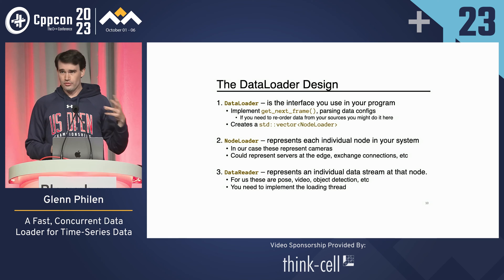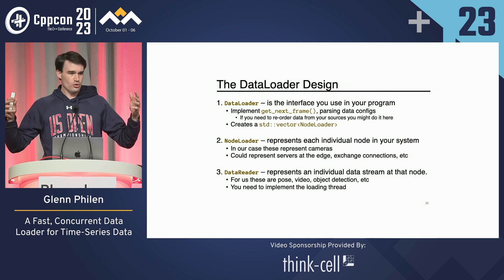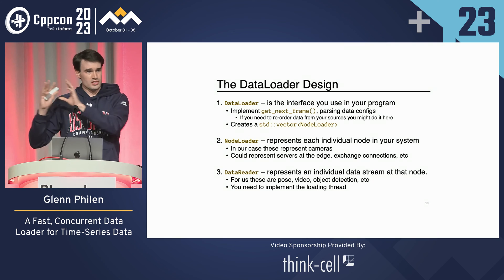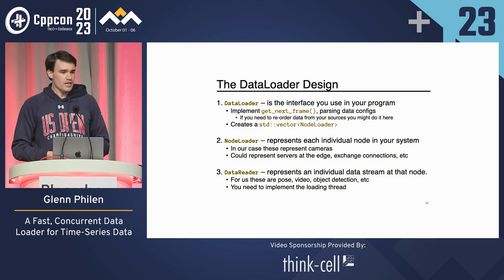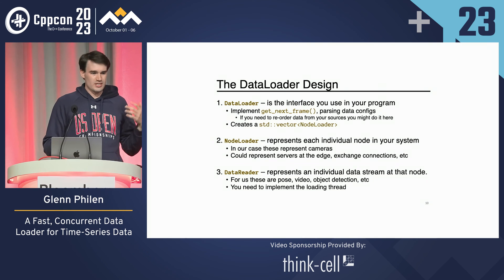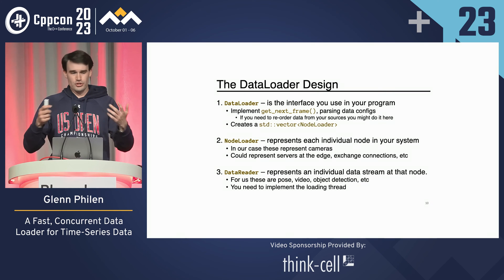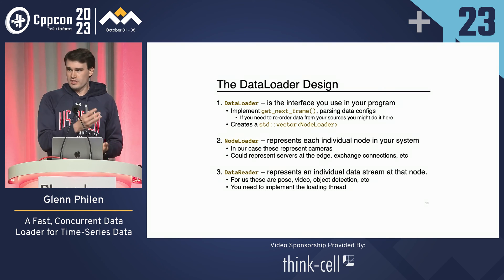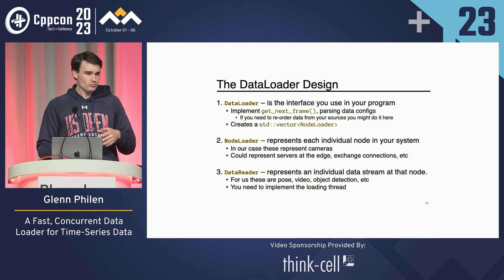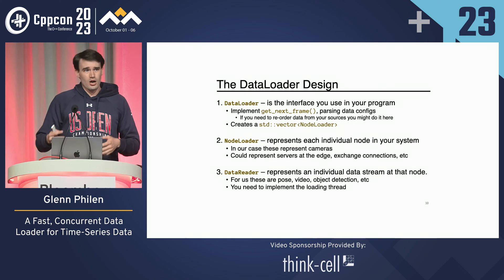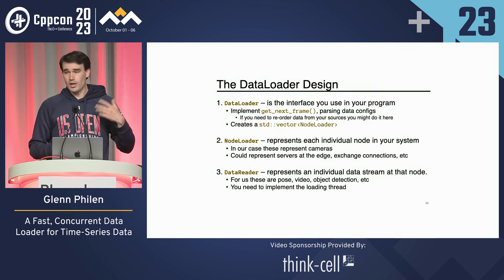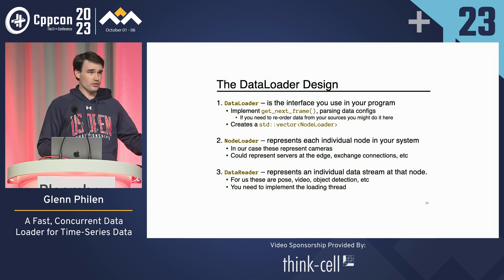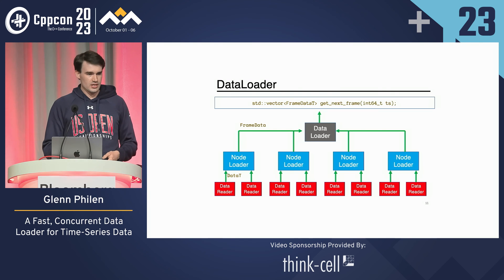So what's the design? There are three levels. There's the overall data loader, there's the node loader which represents the intermediate parts of the system — in our case it's the camera, but it could be an edge server, an exchange connection, whatever it is in your case — and then at the bottom is the data readers. The data reader is what's actually doing the concurrent loading. It represents a stream of data from pose, video, or object detection at that camera. You'll need to implement the loading thread yourself.